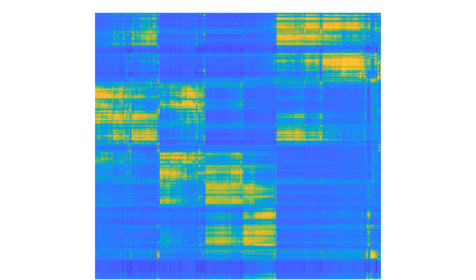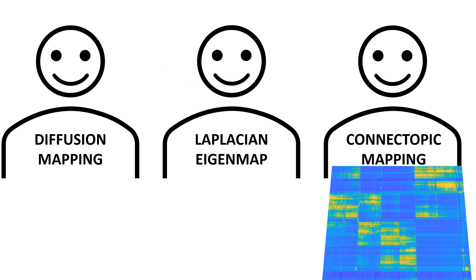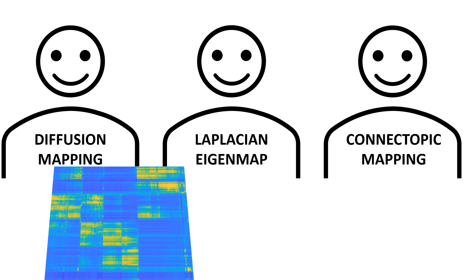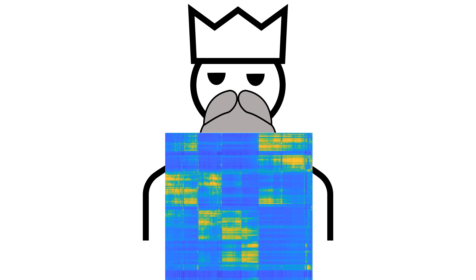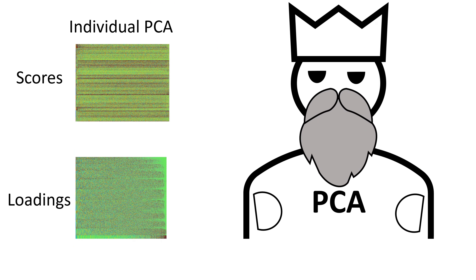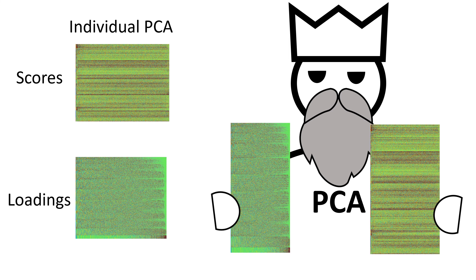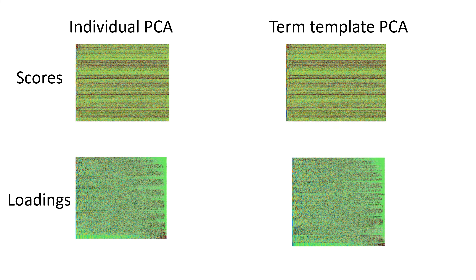Next, we can extract a gradient from this connectivity matrix. There are many possible methods one could use to perform this gradient decomposition, so we went with the reliable principal component analysis. This allows us to decompose a connectivity matrix into a matrix of principal component scores and loadings. We performed two types of decompositions: neonatal connectivity maps were decomposed on an individualized basis, and a holdout set of the 20 oldest neonates at time of scan were averaged and decomposed to create a term template, which we use to provide a reference for fair comparison of different individuals.